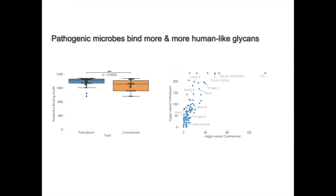Using that, we can look at what do pathobionic strains bind, what do commensal strains bind. What we find across the board is that pathobionic microbes in the vaginal microbiome are predicted to bind a greater diversity of glycan motifs, as well as more human-like glycan motifs, which potentially endows them with the ability to stick better to the mucosal surfaces and potentially lead to infection in some cases.